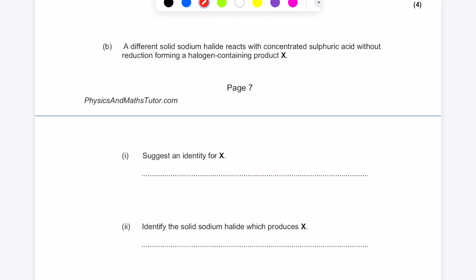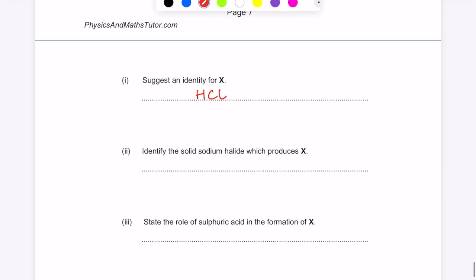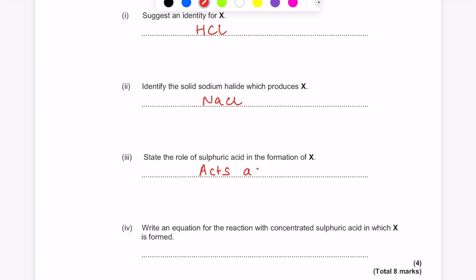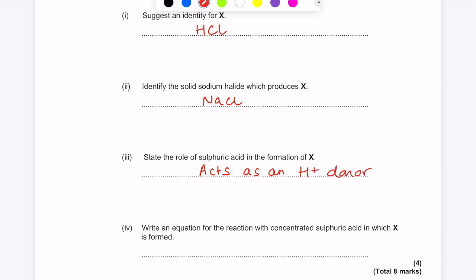A different solid sodium halide reacts with concentrated sulfuric acid without reduction, forming a halogen-containing product X. Suggest an identity for X. So you want a halogen which acts as a weaker reducing agent. So you need to look towards the top of the table. So the solid sodium halide will be something like sodium chloride or sodium fluoride. So in terms of what will that product be, it will be hydrogen chloride or hydrogen fluoride. Identify the solid sodium halide which produces X. Already answered that, NaCl. State the role of sulfuric acid in the formation of X. It's acting as an H plus or proton donor. Write an equation for the reaction with concentrated sulfuric acid in which X is formed.